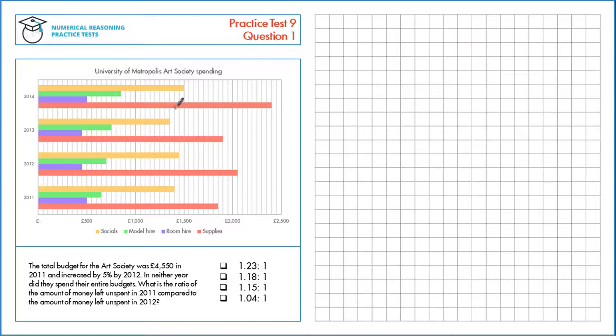First, let's calculate the total budget for 2012. We know that it increased by 5%, and if we started with 100% and add 5%, we'll be left with 105%.